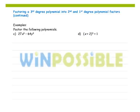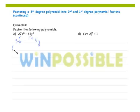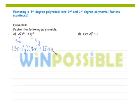And even more examples. Difference of two cubes: the cube root of my first is 3x, and the cube root of my last is 4y. Since it's a difference, my first set of parentheses is 3x minus 4y. My second set of parentheses: I square my first to get 9x squared, plus the product of the two, 12xy, plus the square of my last, 16y squared.